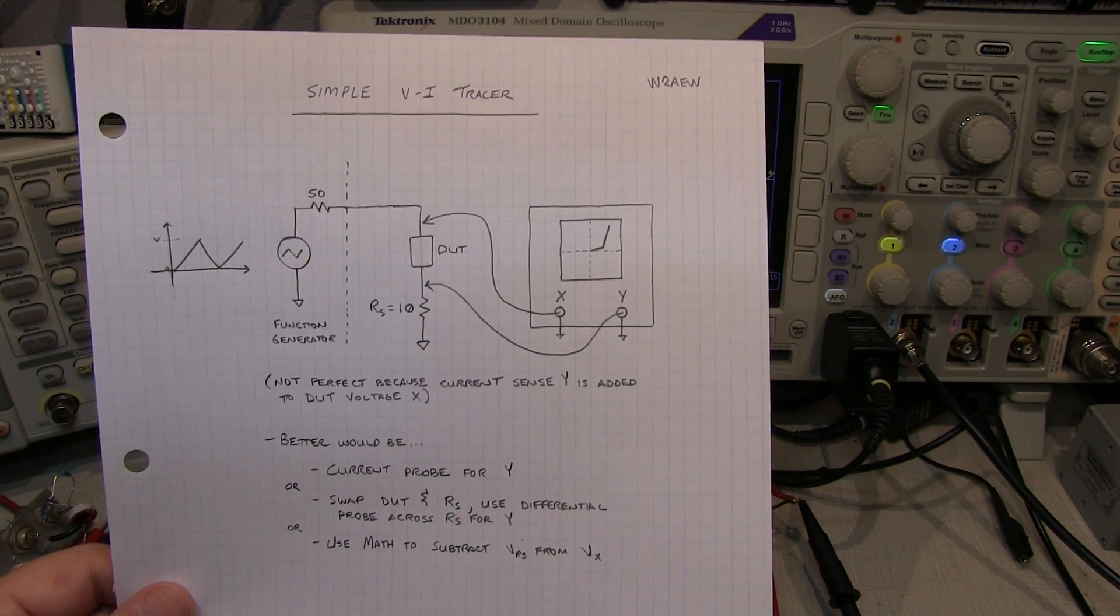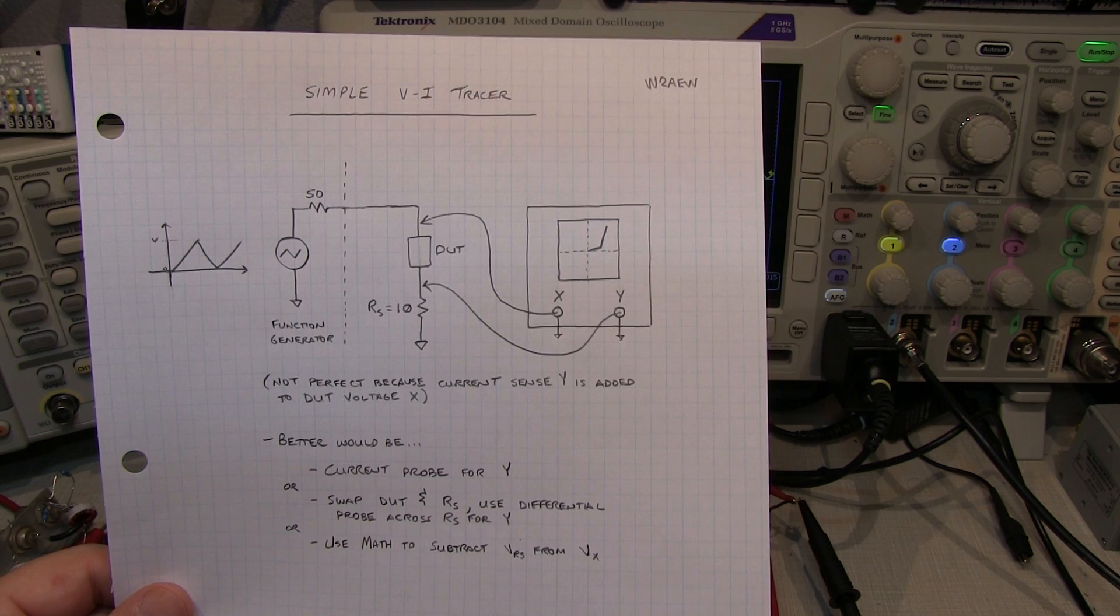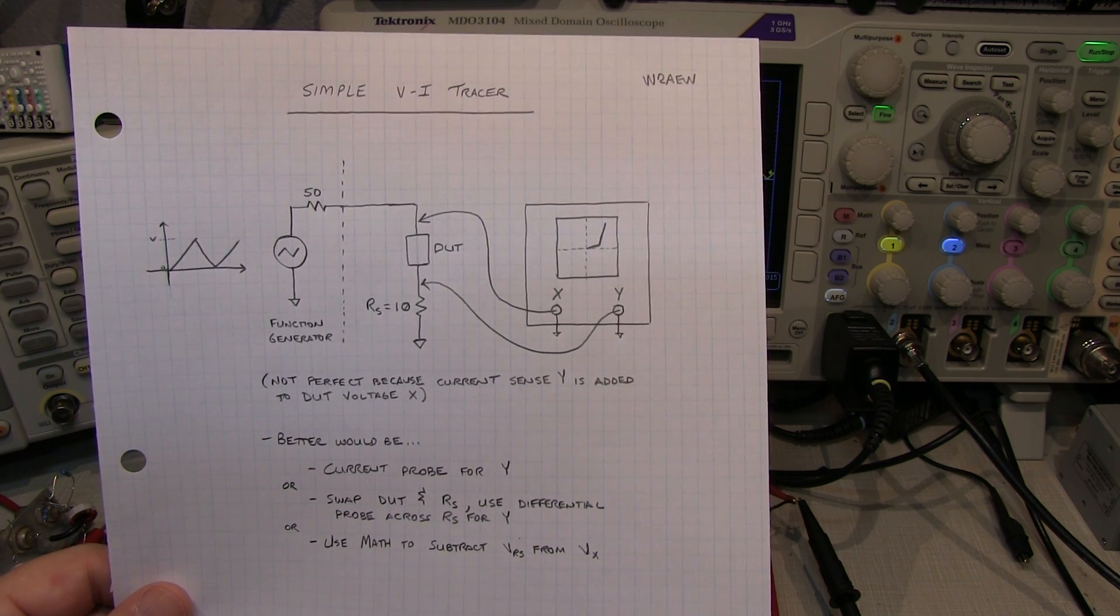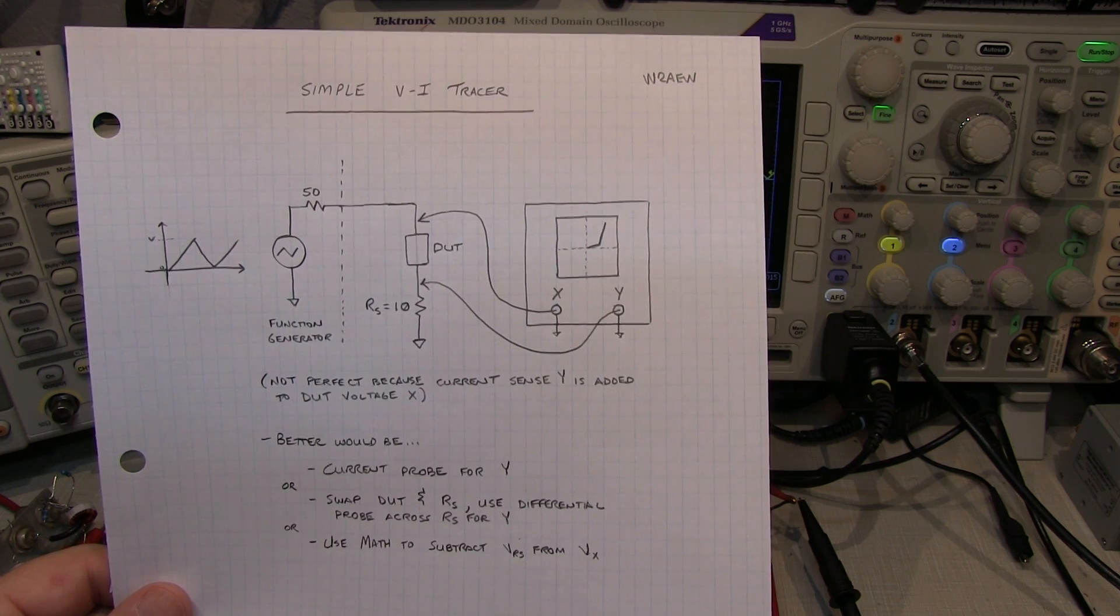This short video is going to show how you can use an oscilloscope and a function generator to make a very simple curve tracer to trace out the voltage and current relationship of a device under test.